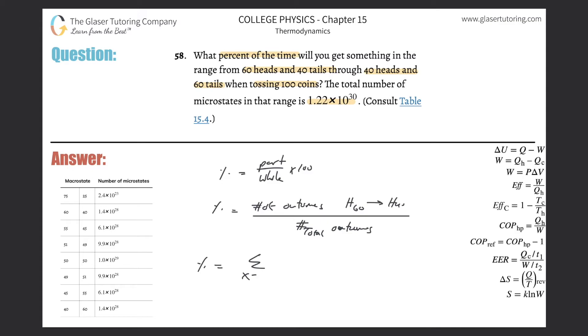So you'd essentially have to do this: find the sum from x equals 40 all the way to 60, and then do the combination probability of 100 choose 100 minus x, and then that whole thing divided by the total number of outcomes of 1.22 times 10 to the 30th.